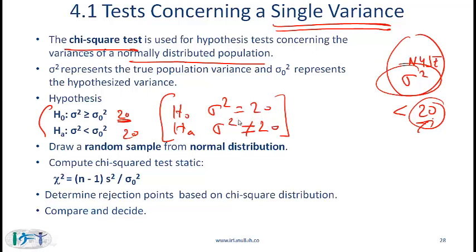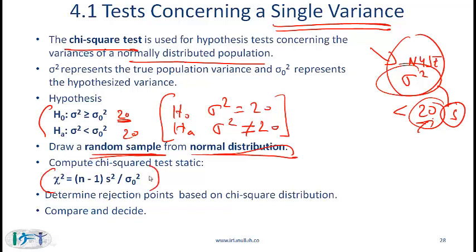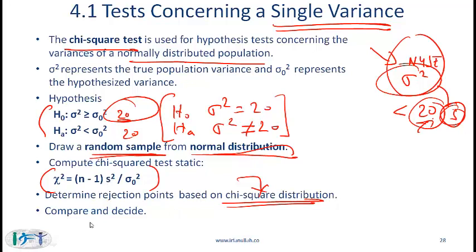Depending on what you are after, you set up the null and alternate accordingly. You then draw a random sample from the normal population, compute the chi-square test statistic using the formula — where N is the sample size, S-squared is the sample variance, and sigma-0-squared is the hypothesized value. Then determine the rejection points from the chi-square distribution, compare the test statistic with the critical value, and decide whether or not to reject the null hypothesis.